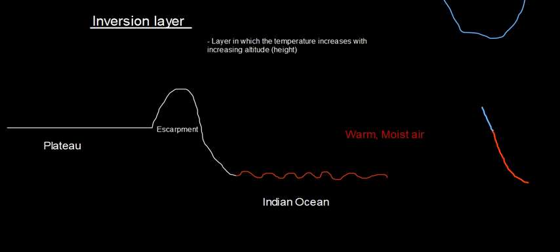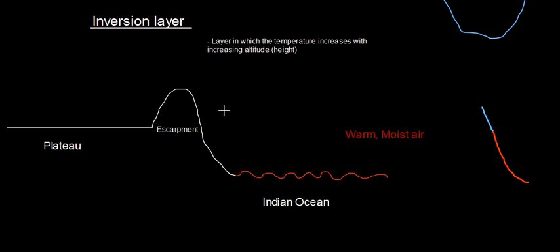The second important concept is the inversion layer. The topography of Africa looks like this — a cross profile showing that in the interior of the country we have the plateau, which is a high-lying flat area. On the edge of the plateau we have the escarpment, which is essentially a steep slope found on the edge of a plateau.